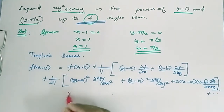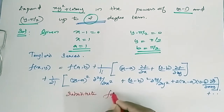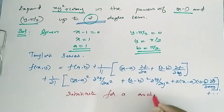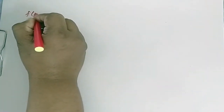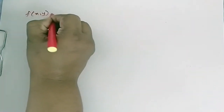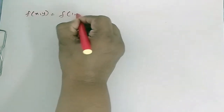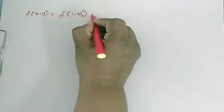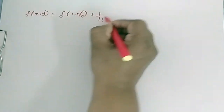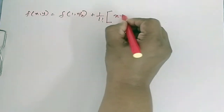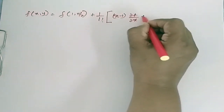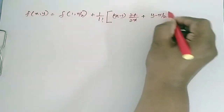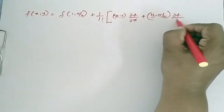Substitute for a and b: f(x, y) = f(1, π/2) + (1/1!) [(x − 1) ∂f/∂x + (y − π/2) ∂f/∂y] + (1/2!) [(x−1)² ∂²f/∂x² + (y−π/2)² ∂²f/∂y² + 2(x−1)(y−π/2) ∂²f/∂x∂y].